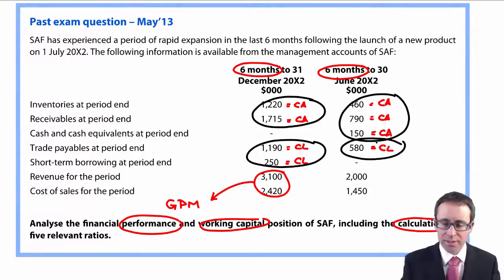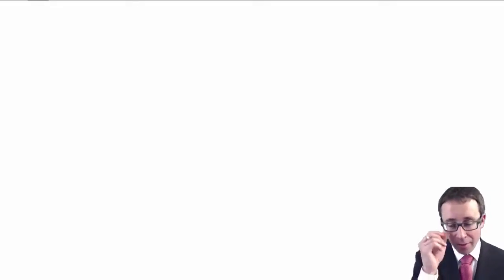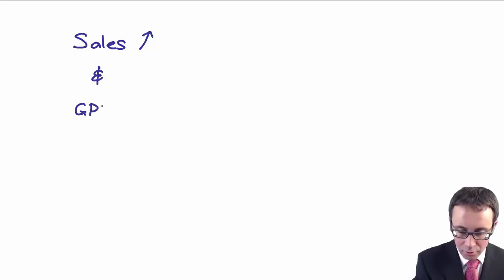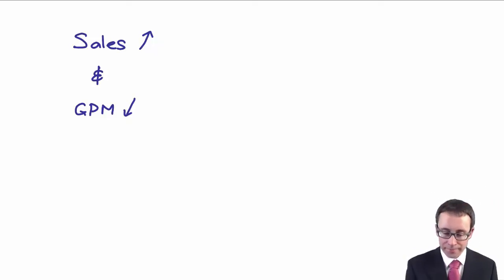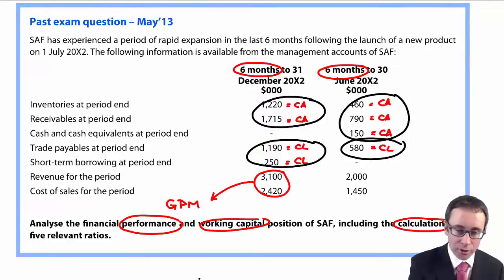What's more important is the analysis. When thinking about the gross margin, you can see initially that there's been an increase in sales, but when you calculate the gross profit margin, you have a reduction in your gross margin. So: an increase in sales, but a reduction in the margin.